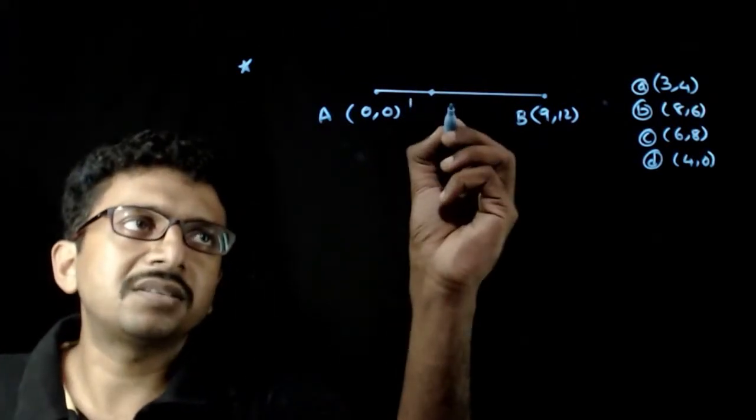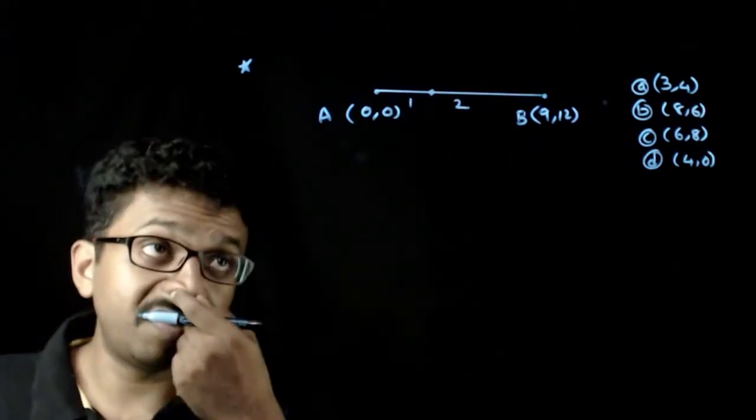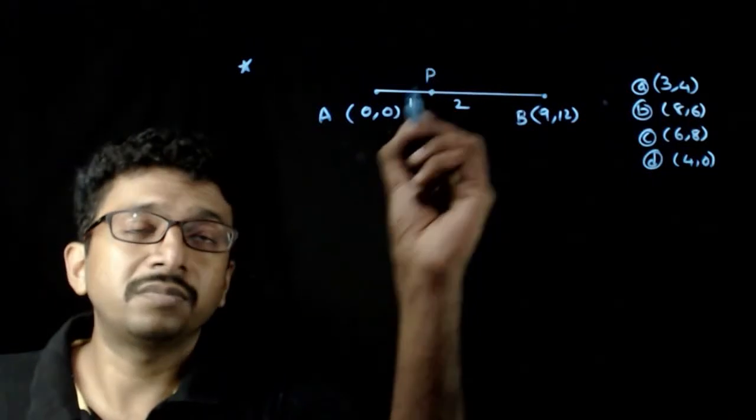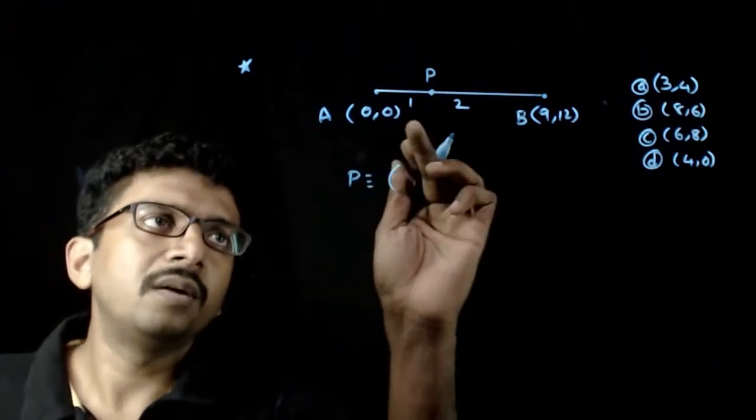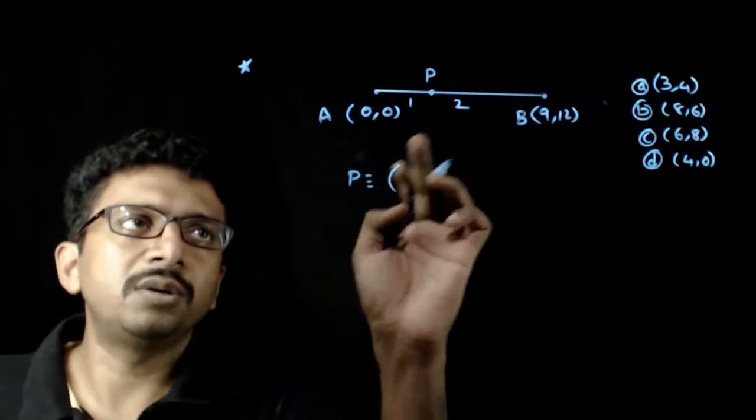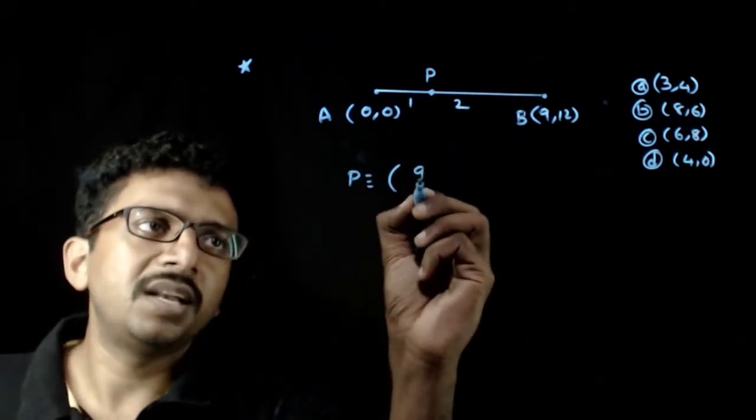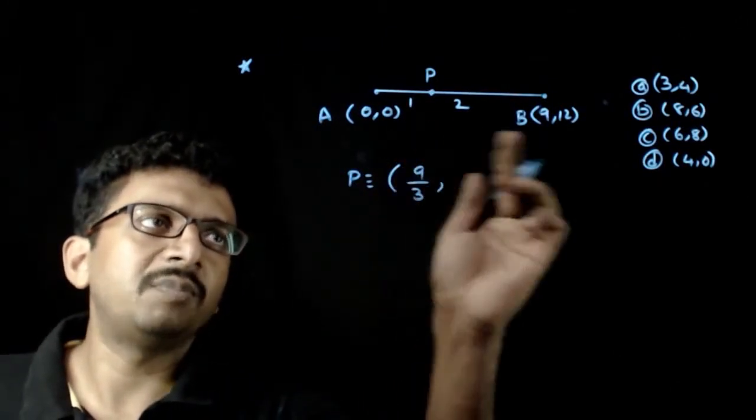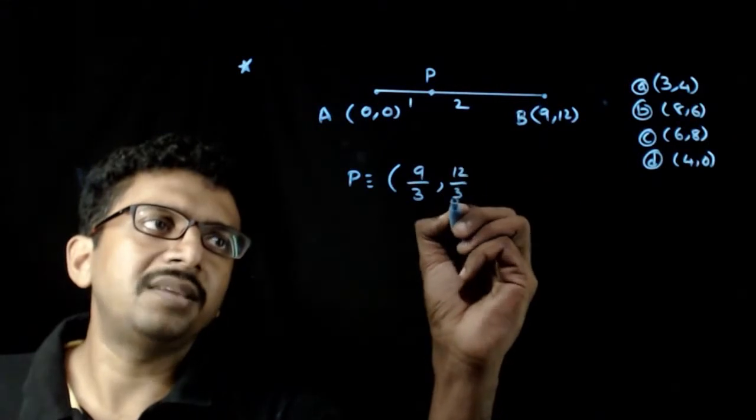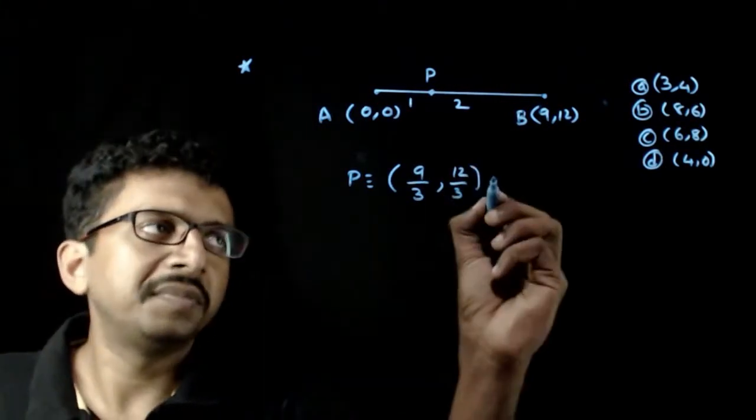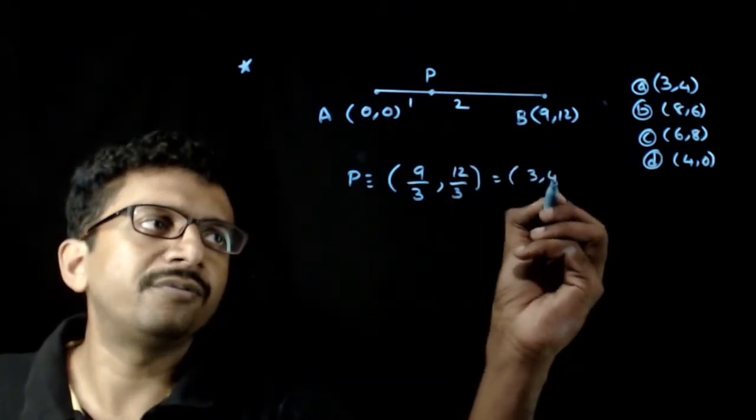First let us try to find the point which divides AB in the ratio 1 is to 2, first point. P is equal to 1 into 9 plus 2 into 0 by 1 plus 2, that is 9 by 3 comma 12 by 3, direct section formula, equal to 3 comma 4.